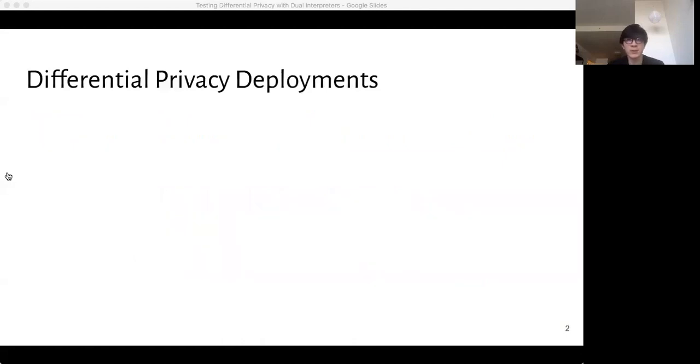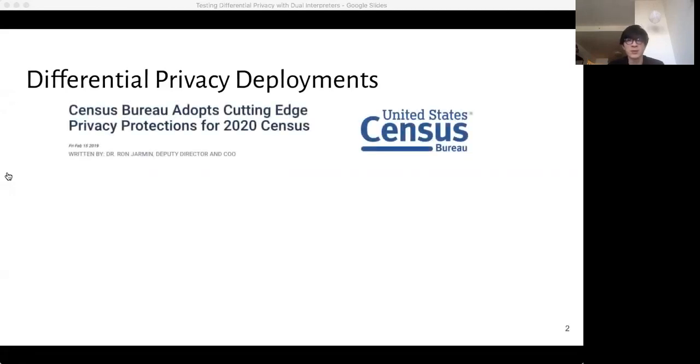Differential privacy introduces noise to data analysis tasks in order to mask sensitive information while preserving most of the data utility.